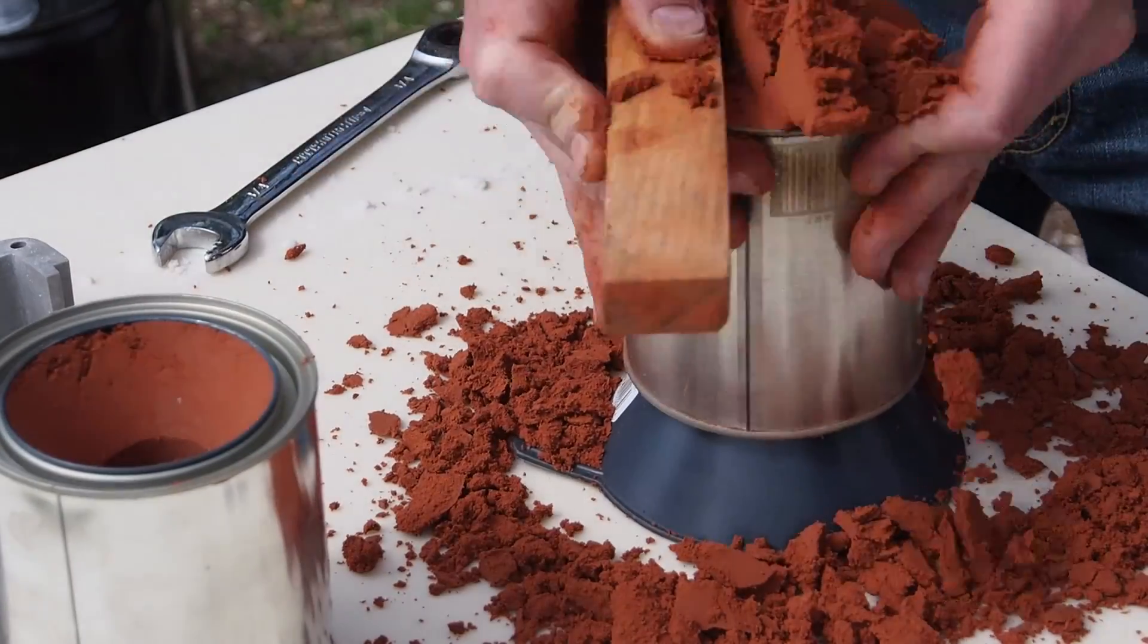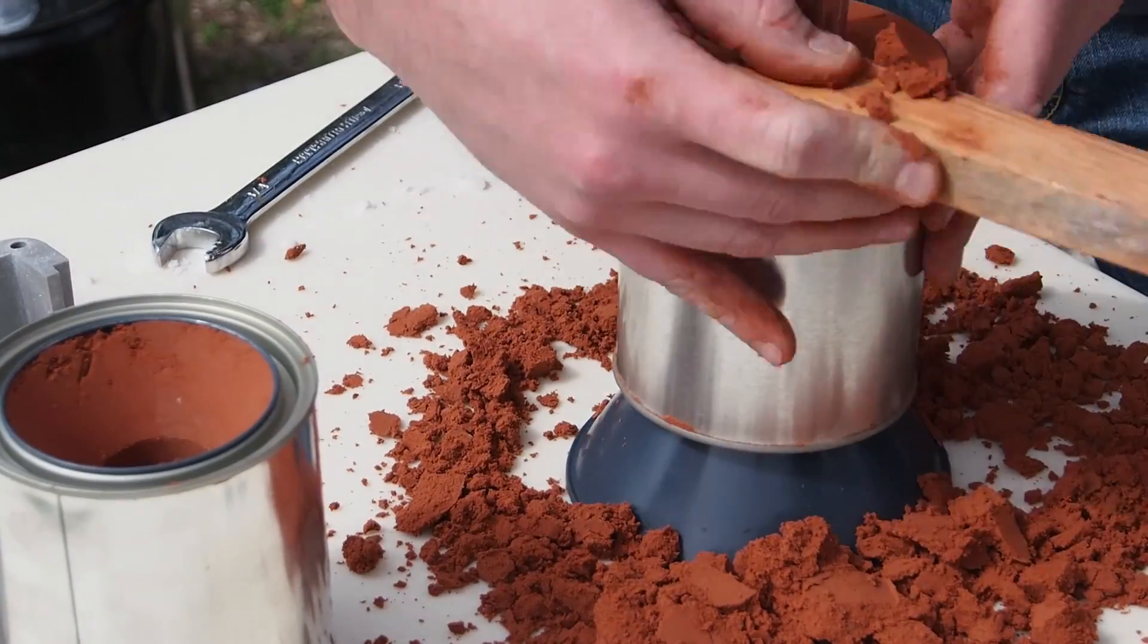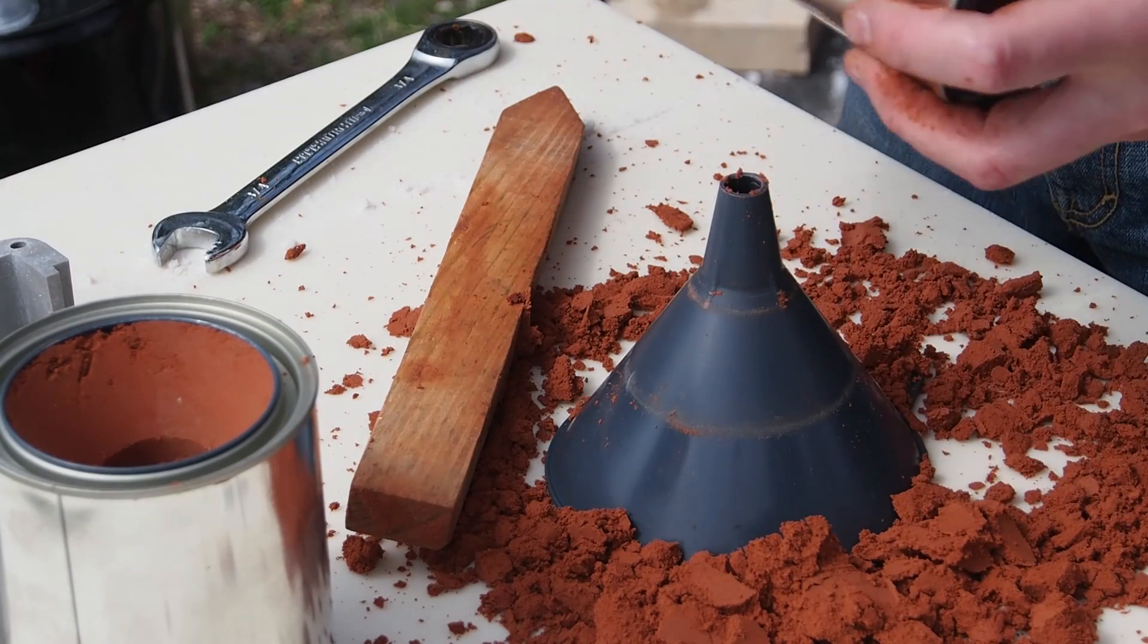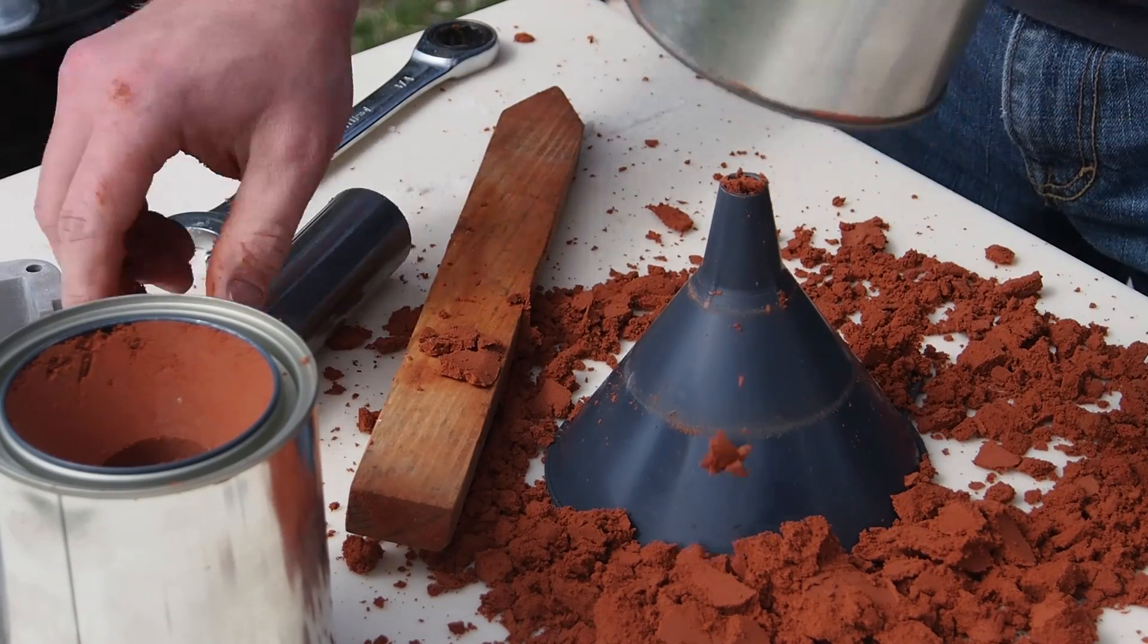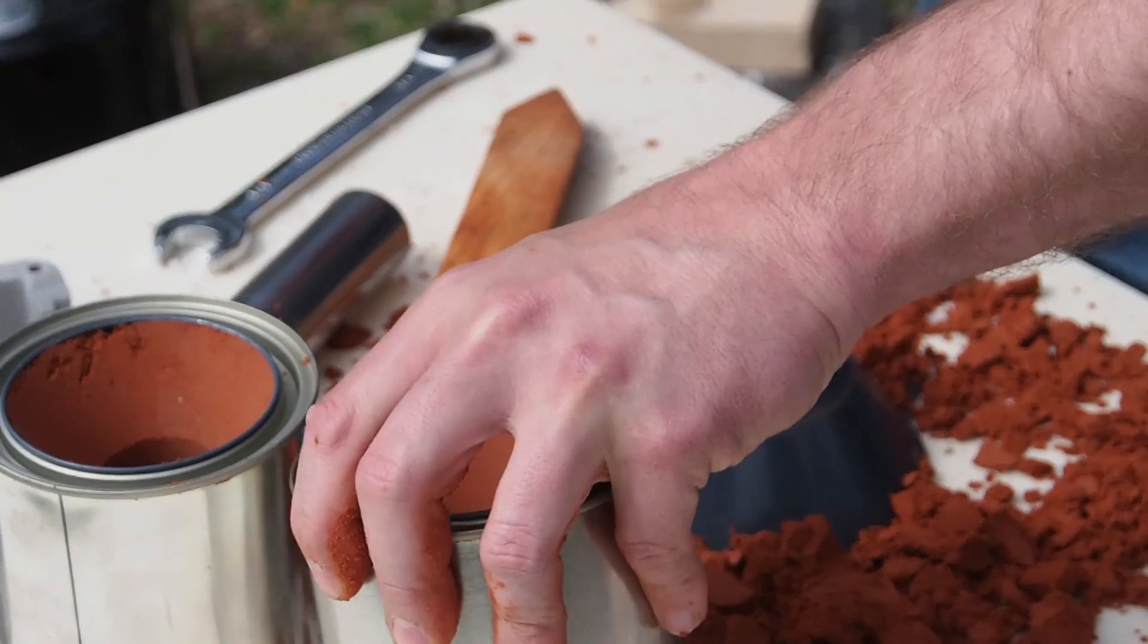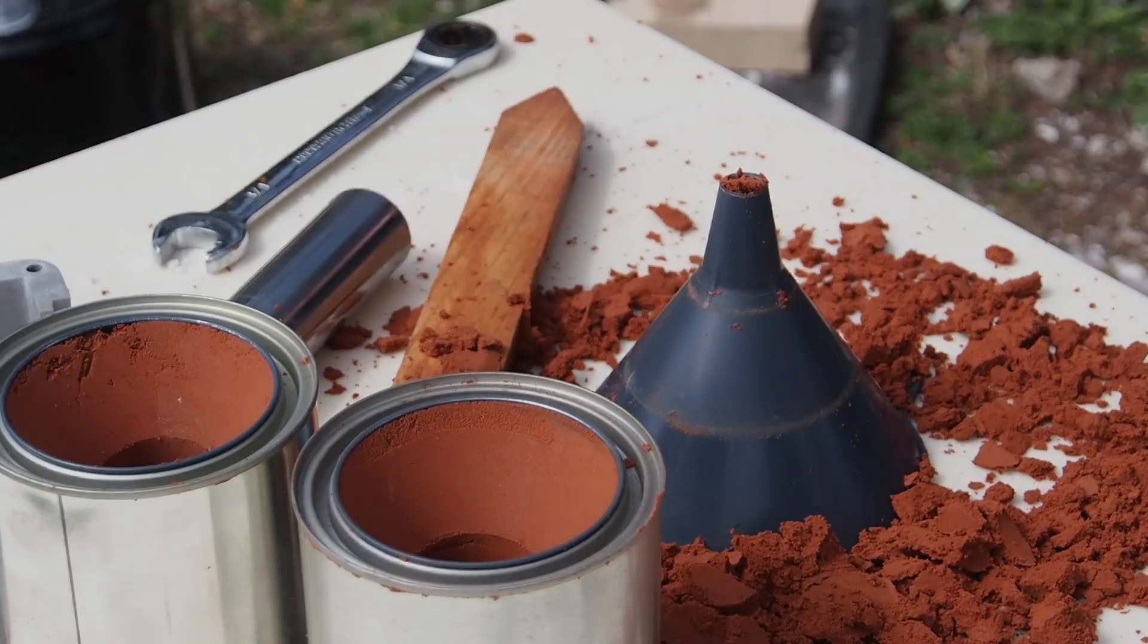Here I'm making some quick Petrobond funnels and risers for the cast. Now I just need to melt some aluminum.